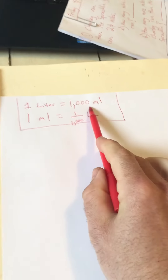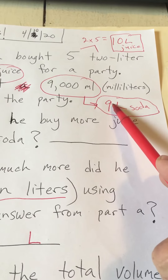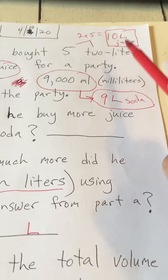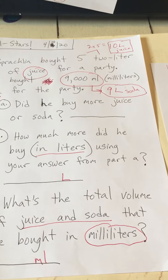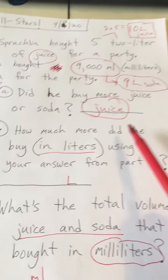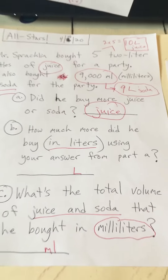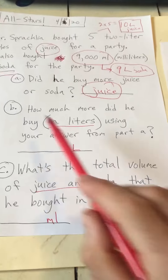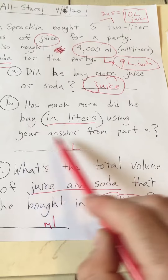Every thousand milliliters makes one liter, so 9,000 milliliters is nine liters. We have ten liters of juice and nine liters of soda. Did he buy more juice or soda? He bought more juice — ten liters compared to nine liters. So the answer is juice.